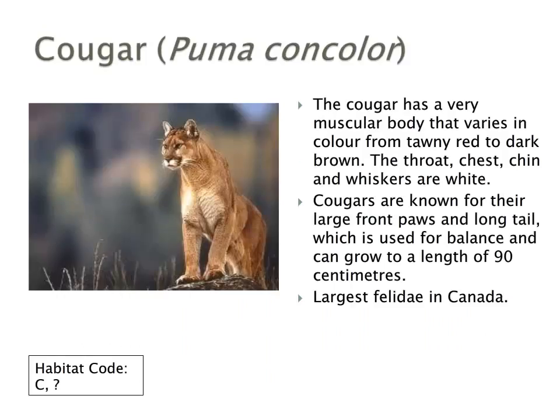The cougar, or mountain lion, has a very muscular body that varies from tawny red to dark brown. They are found throughout the Americas, ranging from South America to North America. They are known for their very large front paws and also a very long tail, which is used for balance. They are the largest cat in Canada.